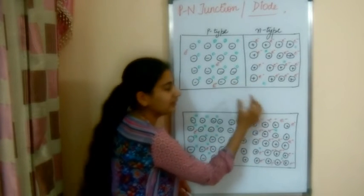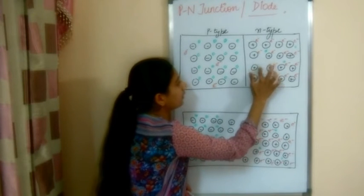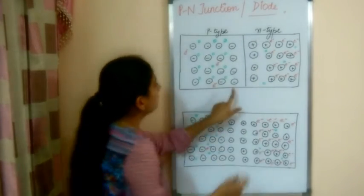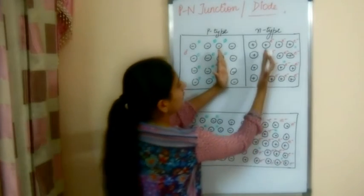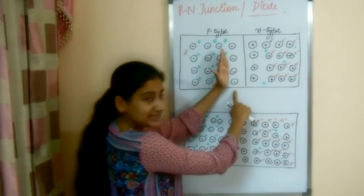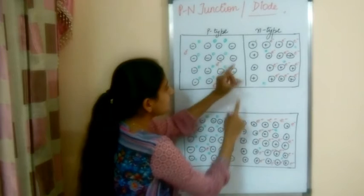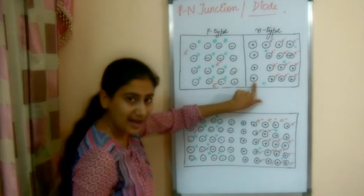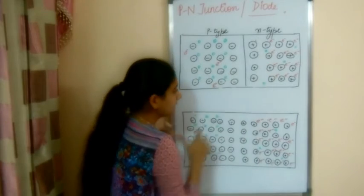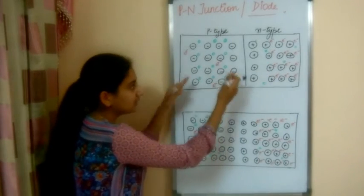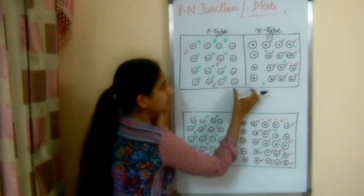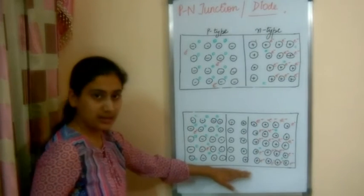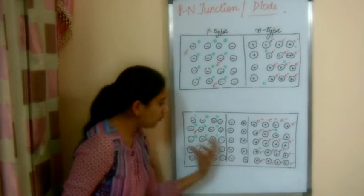When holes and electrons near the junction neutralize, what is left behind? The acceptor atoms and donor atoms remain. So on the P-side, negatively charged uncompensated acceptor ions are left, and on the N-side, positively charged uncompensated donor ions are left. These are charged particles and they remain fixed in place. So if the holes and electrons of the nearby atoms at the junction are neutralized, this is what the region looks like — charged ions remaining.